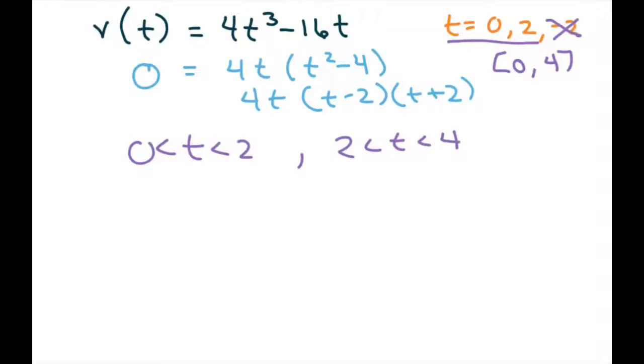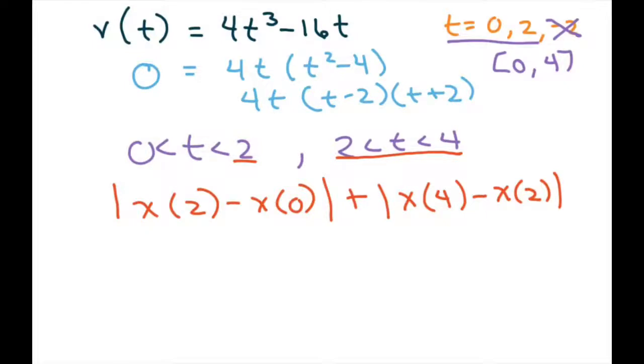And then you just add these two distances up. The way you do that is going to be |x(2) - x(0)| and then you add this distance, so that's going to be |x(4) - x(2)|, and add that up. And basically our equation was t^4 - 8t^2.